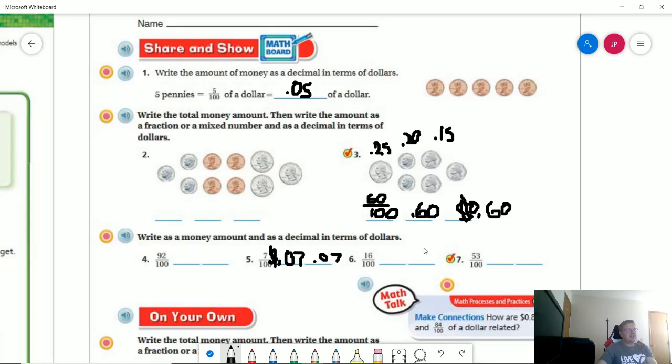Number seven. If I'm going to write the decimal for 53 hundredths, that would be 0.53. And then I would get the same thing for the other part, just with a dollar sign in front of it.